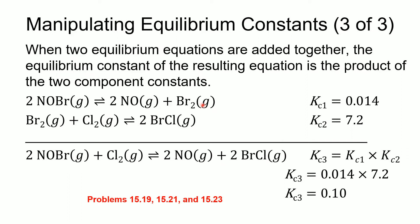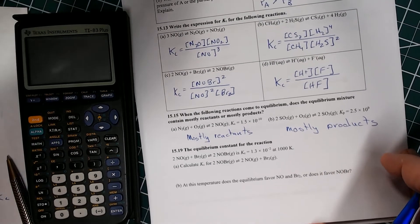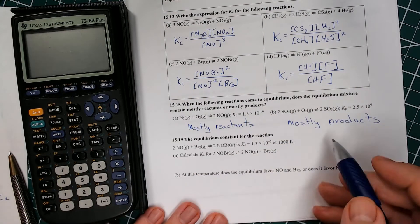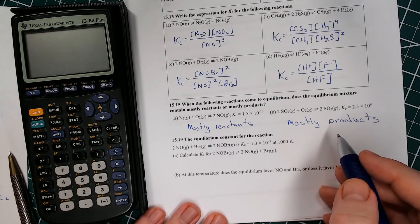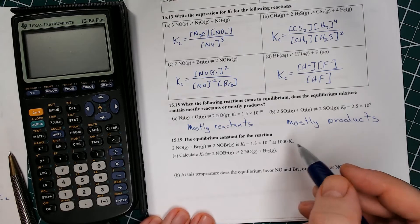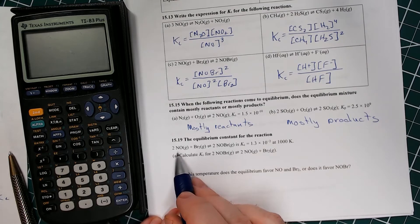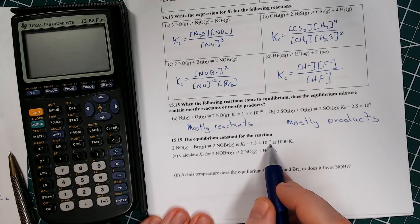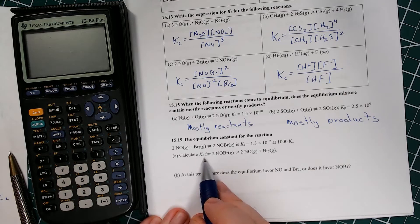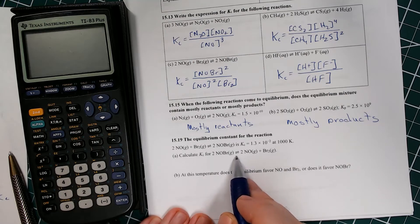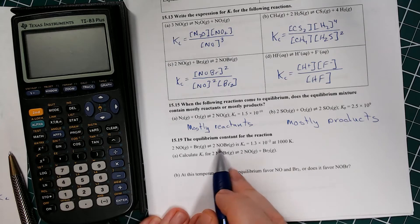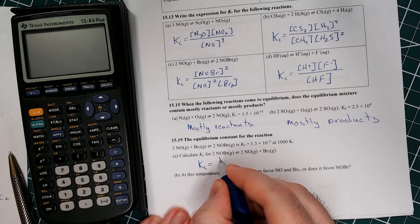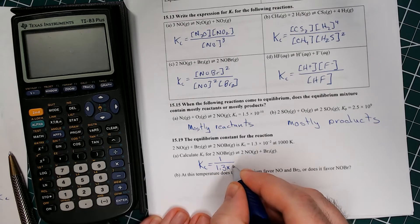Now let's look at problems 19, 21, and 23 from the in-class assignment. Problem 19: 2NO plus Br2 gives us 2NOBr, and this is similar to what we were just looking at. The Kc for this reaction is 1.3 times 10 to the negative 2 at this temperature. We want to calculate Kc for the reverse reaction: 2NOBr in equilibrium with 2NO plus Br2. We simply changed the direction, so Kc will be the reciprocal — 1 over 1.3 times 10 to the negative 2.